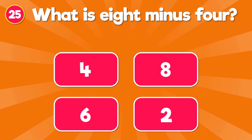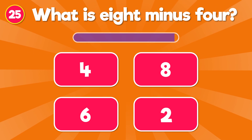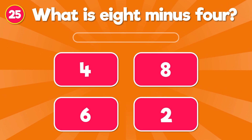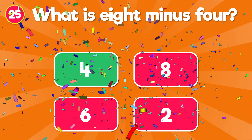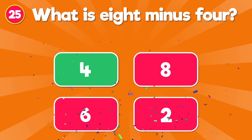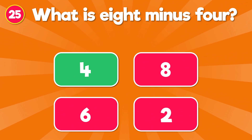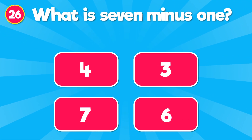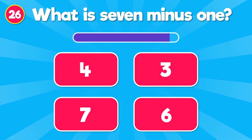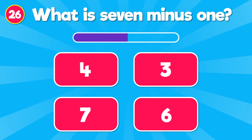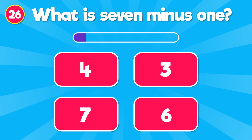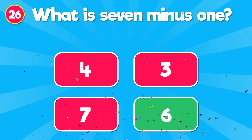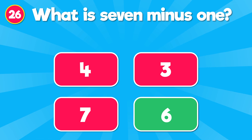What is 8 minus 4? The correct answer is 4. 8 minus 4 is 4. What is 7 minus 1? The correct answer is 6. 7 minus 1 is 6.